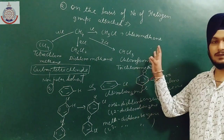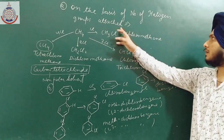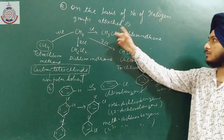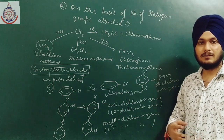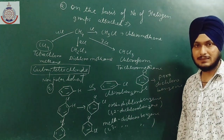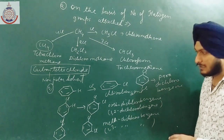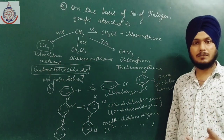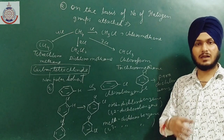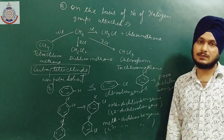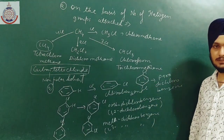So this is the first type of classification on the basis of number of halogen groups attached. Similarly, we will have trichlorobenzene. We will check how many isomers are possible in the case of trichlorobenzene.